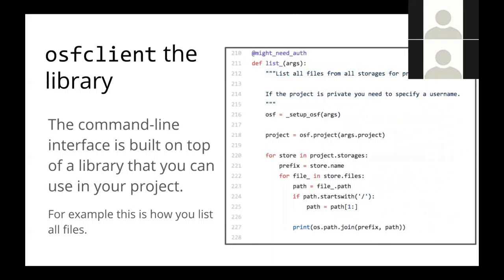OSF client is both a command line client and a Python library, which is quite useful. The code you see here is all the code behind the 'osf list' command line command — which tells you that if you want to implement this yourself in a web application, creating a list of all the files in all the storages of a project is just a few lines of code because you can keep using the library. You can use it as a library and integrate it into your own project without having to fit within the philosophy of the command line client.